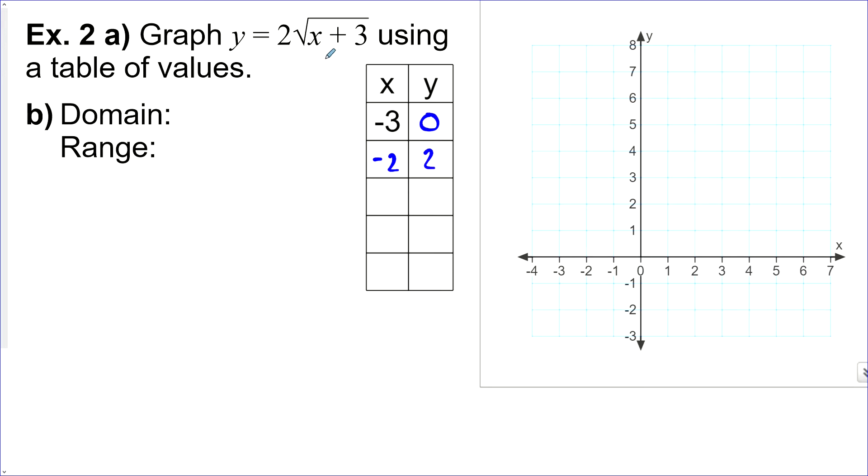Negative 1 is not a particularly useful one because it gives us an irrational answer. So, let's go to 0, how about positive 1? And that gives us a perfect square radicand. So, 1 plus 3 is 4, square root of 4 is 2, and 2 times 2 is 4. The next useful number will probably be 6, and that will give us a radicand of 9. Square root of 9 is 3, and 3 times 2 is 6. And the last one we'll need is, how about 13? Square root of 16 is 4, times 2 is 8.